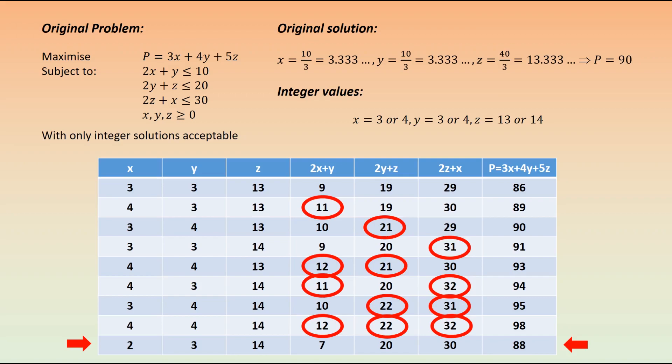I'm going to change the problem slightly to illustrate a slightly different point. If I change this constraint—2x plus y is less than or equal to 11 now rather than 10—we do get a different solution to the simplex problem. If we follow it through, that is the solution: x is 3.7, y is 3.4, z is 13.1, and we've got a P value of 90.6.